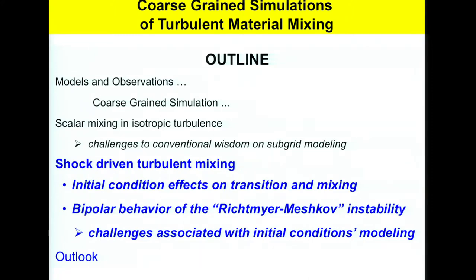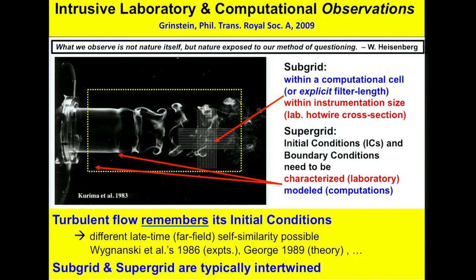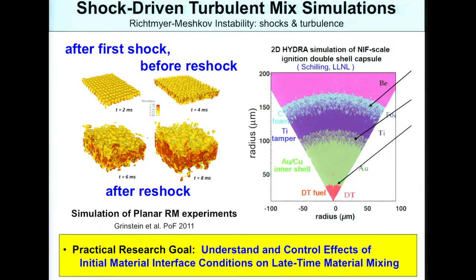The other problem is shock-driven turbulence mixing. We have a finite-resolution grid so we need a sub-scale model — the same problem experimentalists have with finite-size instrumentation. Likewise, you have a finite domain requiring initial and boundary conditions. For a unique, well-posed solution, you must provide sub-scale information and initial and boundary condition information. When doing transitional flows like shock-driven turbulence, you have to deal with initial conditions.